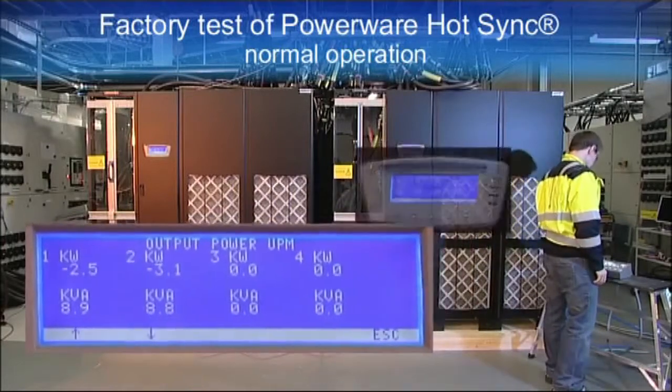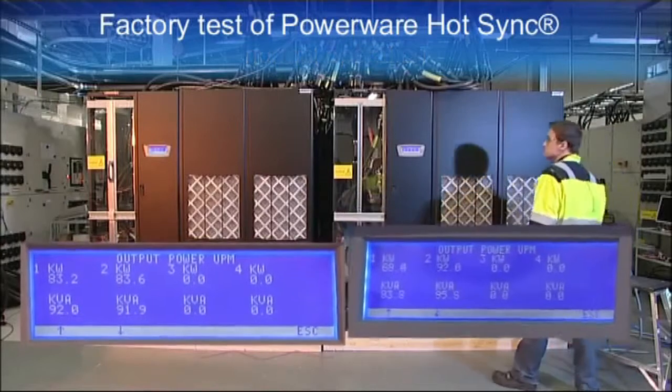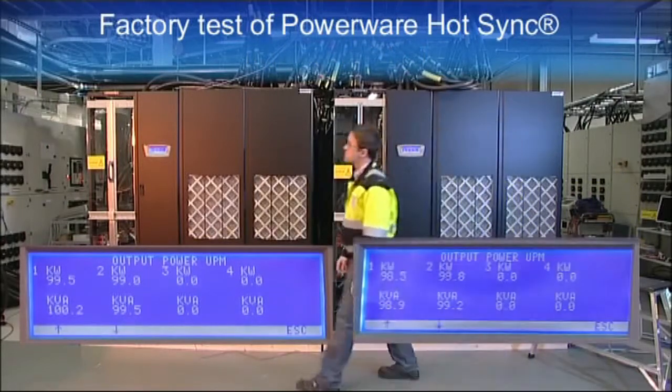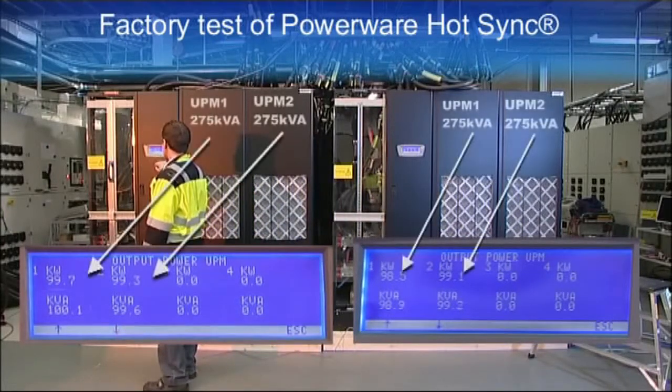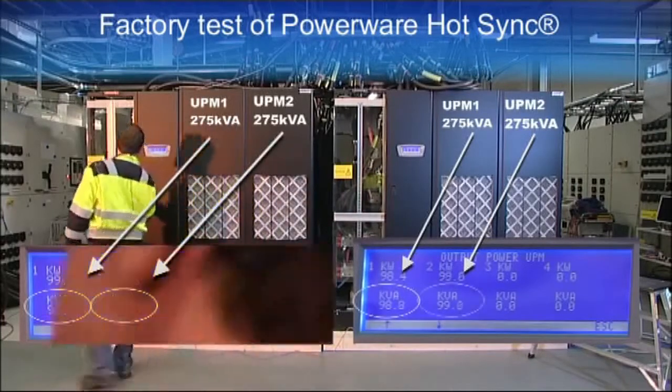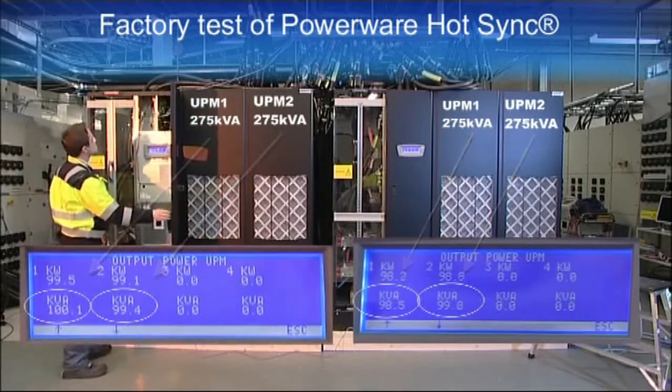We increase the load and see that the load is shared equally. There is a communication line between the units. Communication is not used for load sharing, but to convey information and alarm signals in the system.